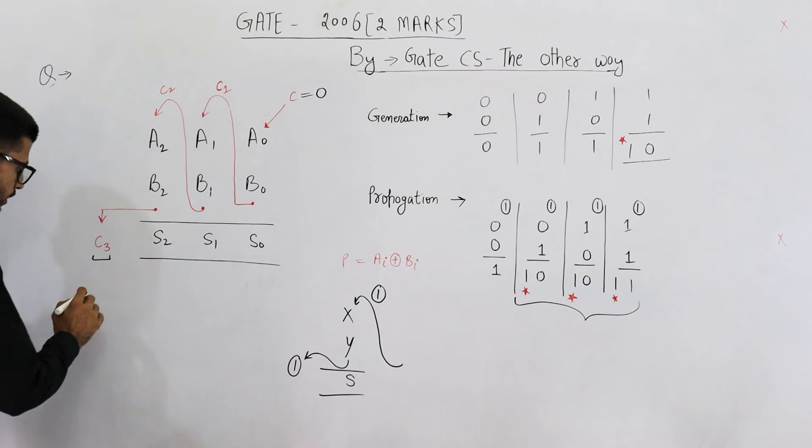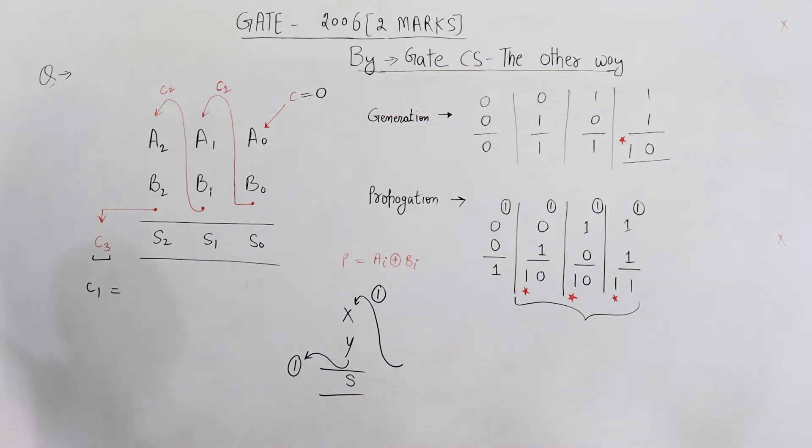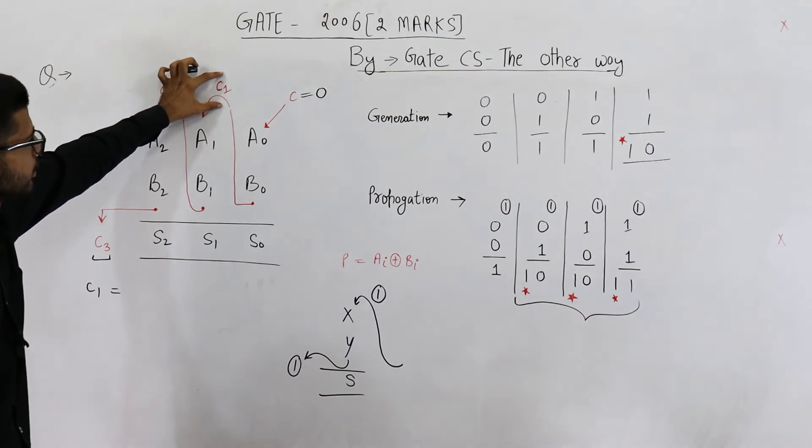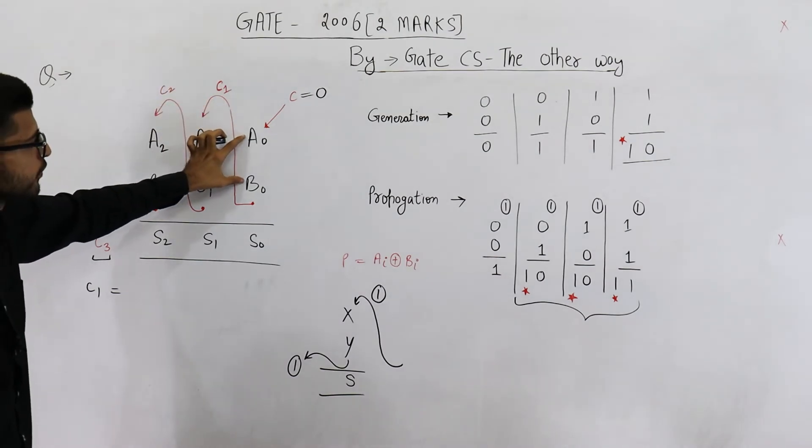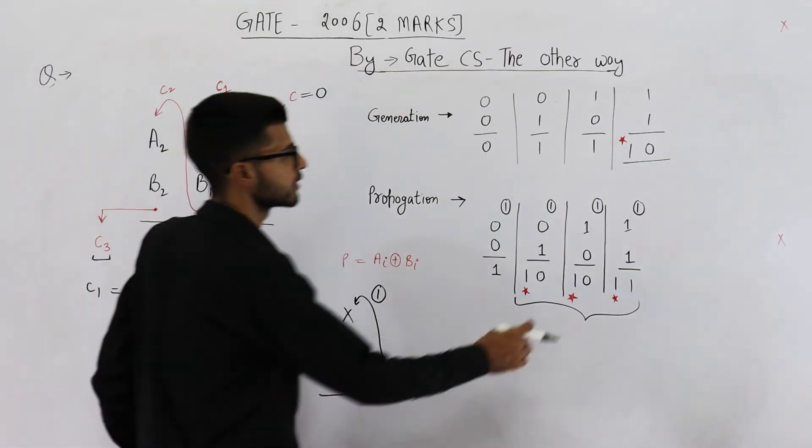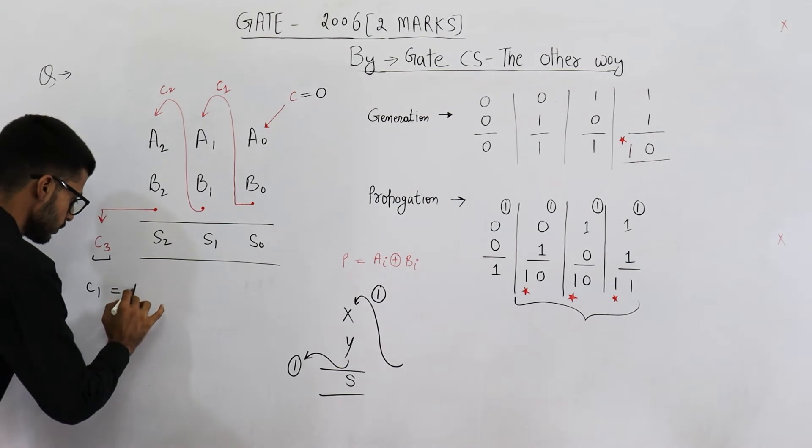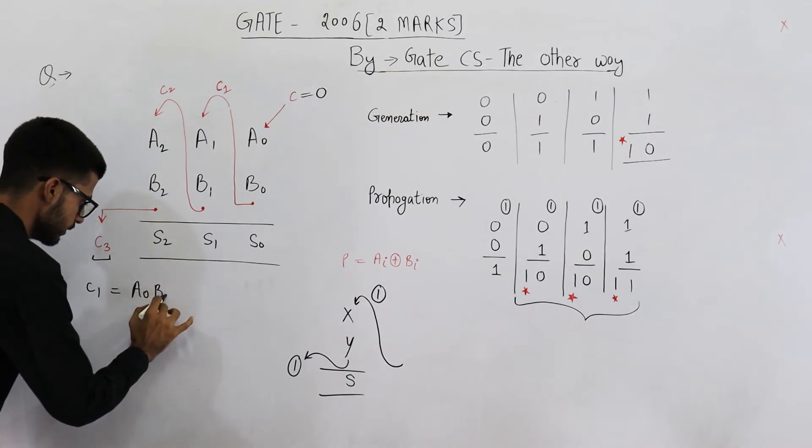Now this question is very easy. I am writing the equation for C1. You can see C1 can be generated from stage 0. If both of these numbers are 1, 1, this case, then C1 will be high. So A0, B0.